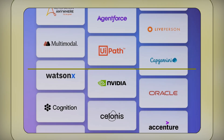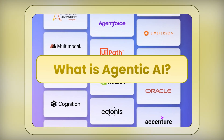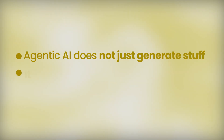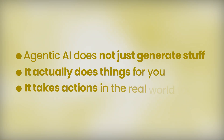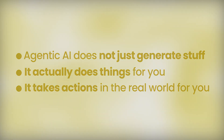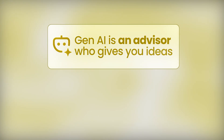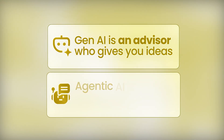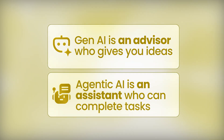And this is exactly where Agentic AI comes in. Agentic AI does not just generate stuff — it actually does things for you. It takes actions in the real world. Think of Gen AI as an advisor who gives you ideas, while Agentic AI is more like an assistant who can actually complete tasks from start to finish.